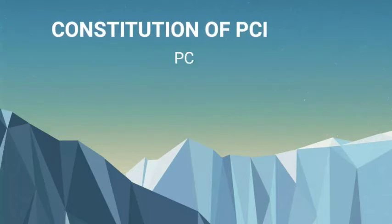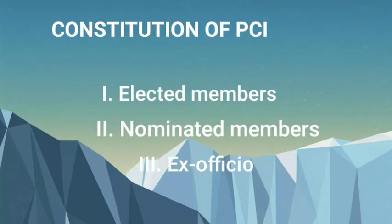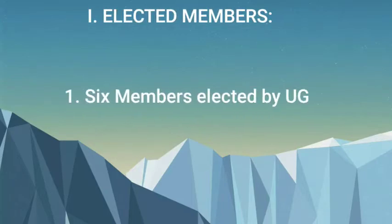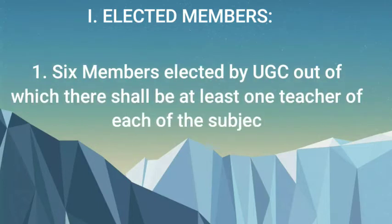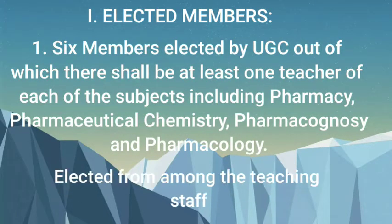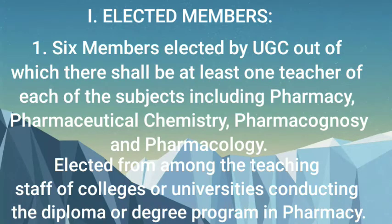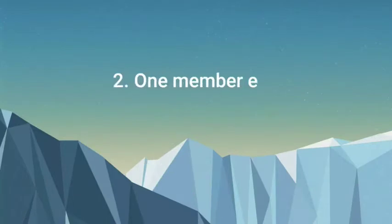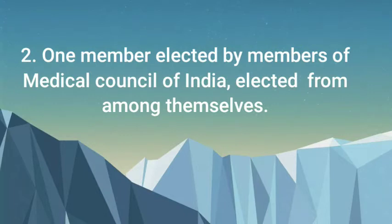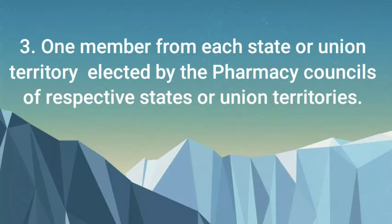Constitution of PCI — Elected Members: (1) 6 members elected by UGC, out of which there shall be at least one teacher of each of the subjects including Pharmacy, Pharmaceutical Chemistry, Pharmacognosy, and Pharmacology, elected from among the teaching staff of colleges or universities conducting the diploma or degree program in Pharmacy. (2) 1 member elected by members of Medical Council of India, elected from among themselves. (3) 1 member from each state or union territory, elected by the Pharmacy Councils of respective states or union territories.